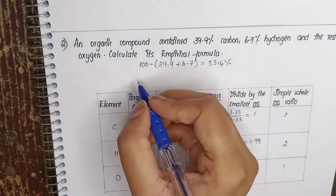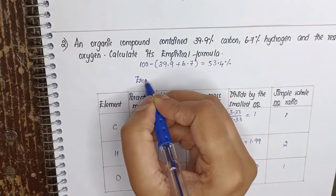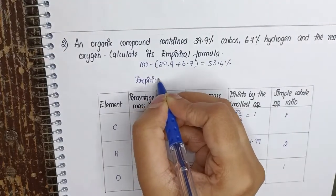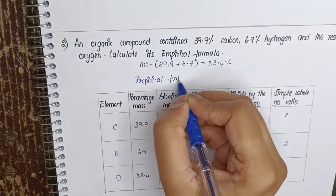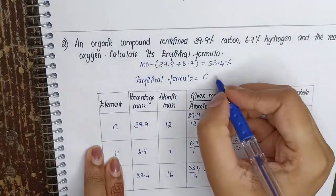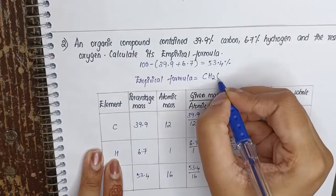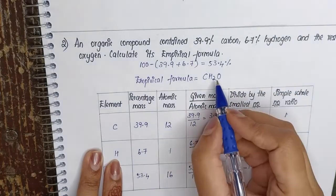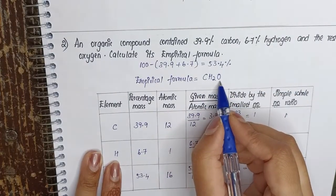Therefore, the empirical formula is carbon with 1, hydrogen has 2, and oxygen 1. So your empirical formula is CH2O.